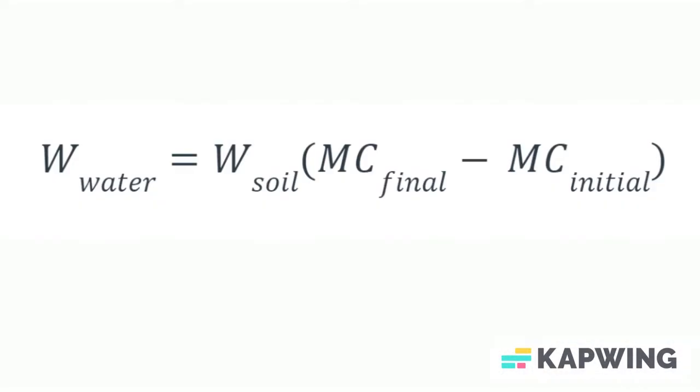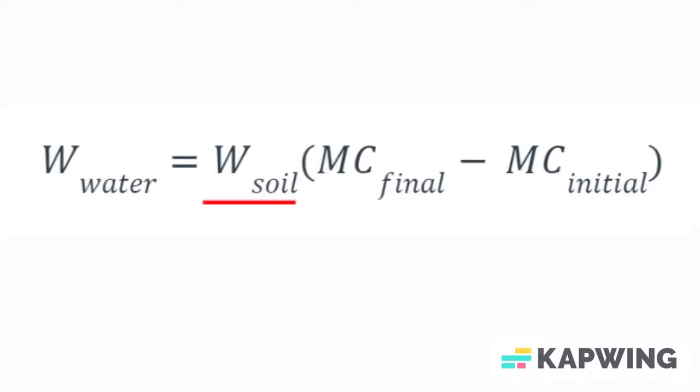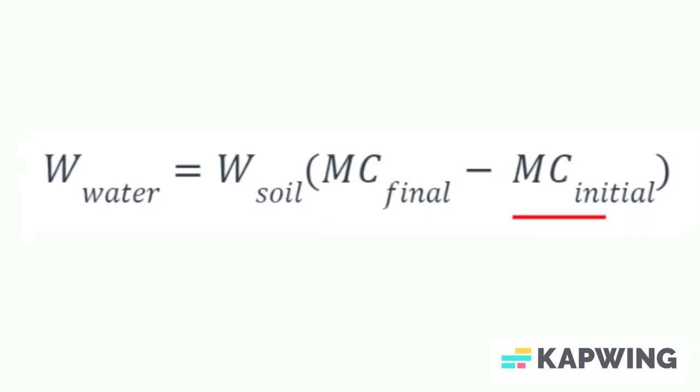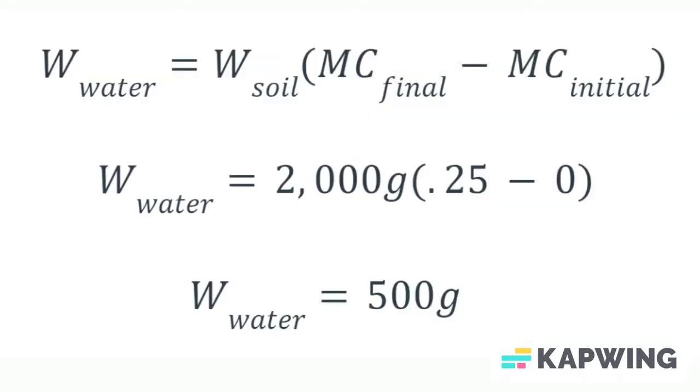You will then be using this formula to calculate how much water will be needed. We know the weight of the soil, we know the moisture content we want our sample to have, and since our soil is dry, we can assume that the initial moisture content is zero. Here is a sample calculation if we start it off with 2000 grams and our goal is to reach a moisture content of 25%.